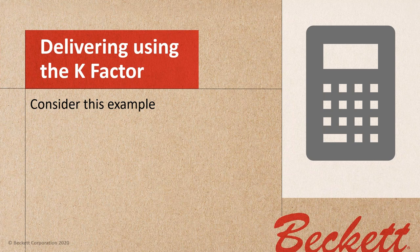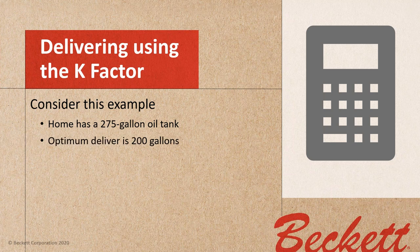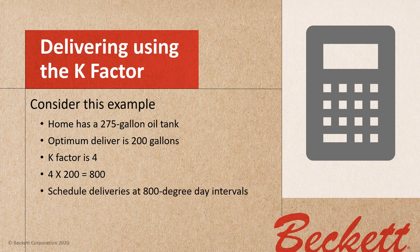Now let's look at delivering using the K-factor. The home has a 275-gallon oil tank, and the optimum delivery is 200 gallons. The K-factor is 4. So we take the K-factor of 4 times 200 and we get 800. We schedule and pull our tickets for deliveries at 800 degree days. We're just refreshing our brains with all this.